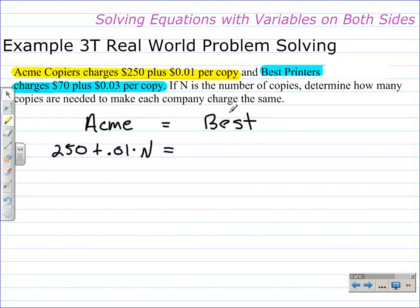We want that to be equal to the charge for Best Printers, which charges a $70 flat fee plus $0.03 per copy, so we'll multiply that by the number of copies. This expression represents the cost for copies at Best Printers. Now we need to solve this equation.